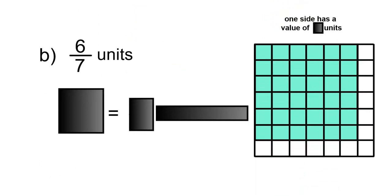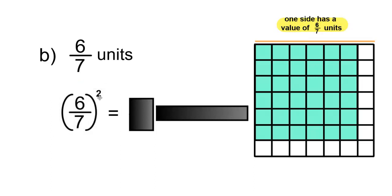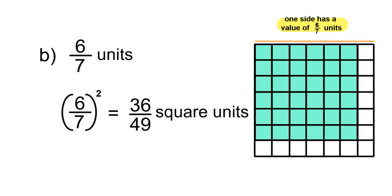So the area is equal to 1 over 9 square units. B: One side will have a value of 6 out of 7 units. So one side has a value of 6 over 7 units. This would be your square root. So to find the area, you'll square that, which gives 36 out of 49. So 36 out of 49 square units.